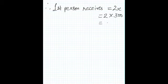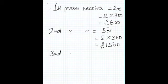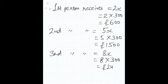Therefore, first person receives 2x, which means 2 into 300, which is 600 pounds. Second person receives 5x, which is 5 into 300, which is 1500 pounds. Third person receives 8x, which is 8 times 300, which will give you 2400 pounds. And that's your answer.